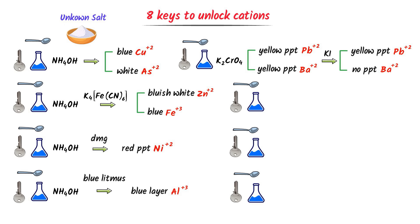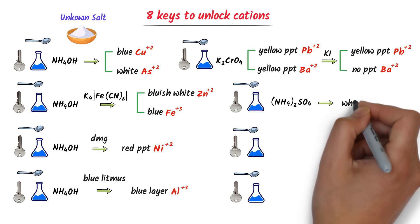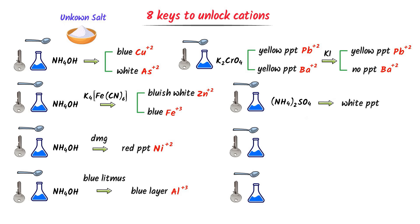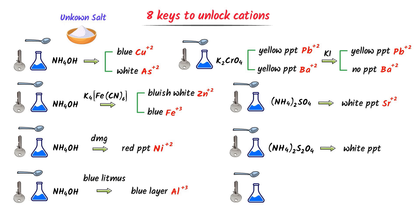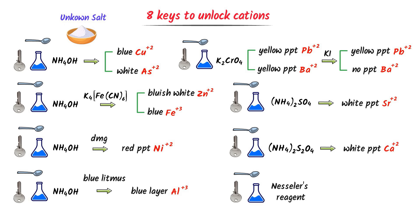In the sixth key, we add ammonium sulfate and get a white precipitate, indicating strontium ion. In the seventh key, we add ammonium oxalate; a white precipitate shows the presence of calcium ion. In the eighth key, we add Nessler's reagent; a brown precipitate shows the presence of ammonium ion. Using these eight keys, we can easily identify the cation in any unknown salt. Therefore, using all 13 keys overall, we can easily crack any question of salt analysis.